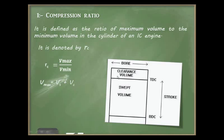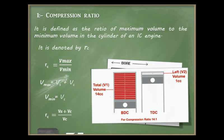Vc is known as clearance volume — the volume between the top dead center and the cylinder head, or the volume not swept by the piston. Thus RC can be rewritten as (Vs + Vc) / Vc. For example, if the total volume (swept + clearance) is 14 cc and the minimum volume is 1 cc, then the compression ratio is 14:1.